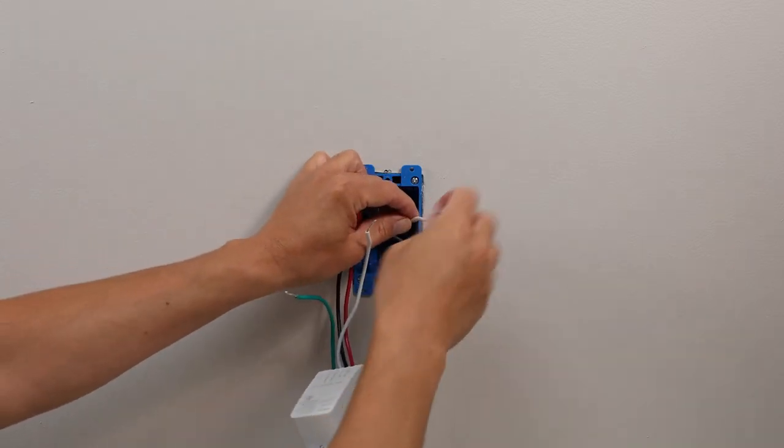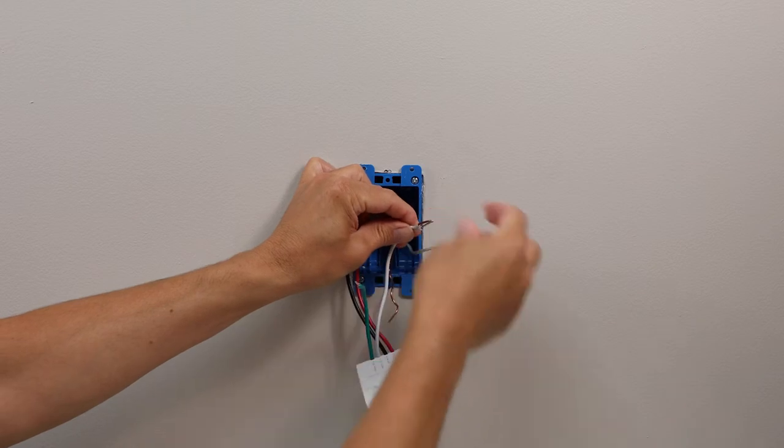Next, use wire nuts to connect the white neutral wire from the switch to the one in the wall.